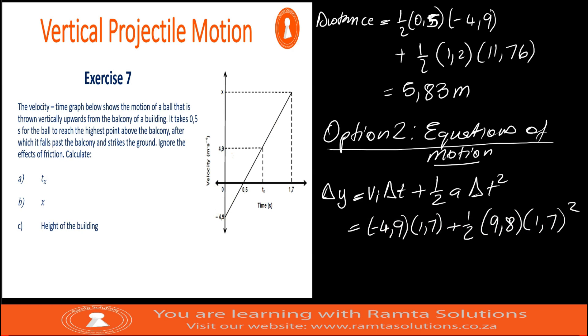Let's get it. Negative 4.9 into 1.7 plus 4.9 into 1.7. We are still getting 5.83 meters. So the height of the building is 5.83 meters. All right, guys.